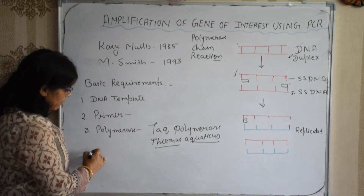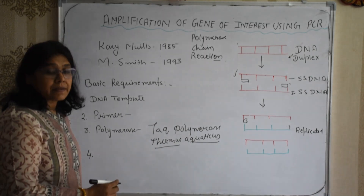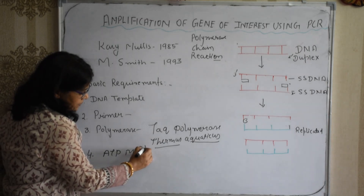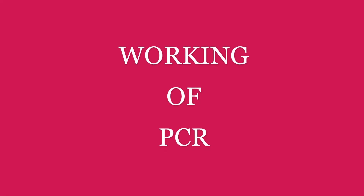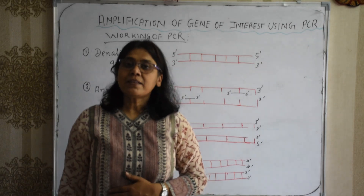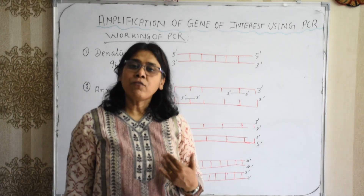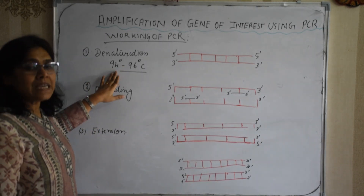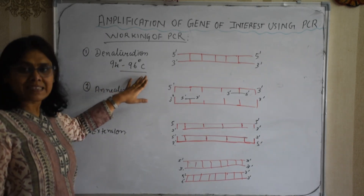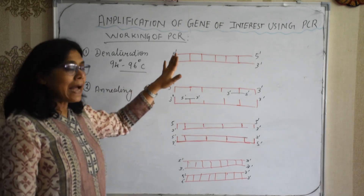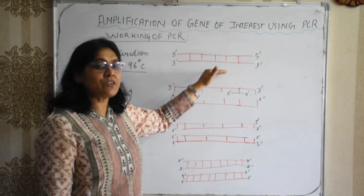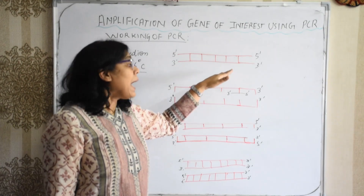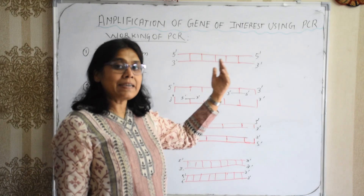The next requirement is ATP and magnesium ions. Now, looking at the working of PCR: the DNA duplex is heated at a high temperature, usually between 94 to 96 degrees centigrade. At that temperature, the hydrogen bonds present between the strands of the DNA are broken and the DNA is converted into a single-stranded template.